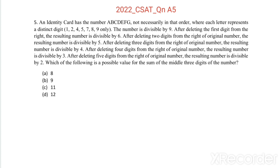The number is divisible by 9. After deleting the first digit from the right, the resulting number is divisible by 6. After deleting 2 digits from the right, the result is divisible by 5. After deleting 3 digits, divisible by 4. After deleting 4 digits, divisible by 3. After deleting 5 digits, divisible by 2. Which of the following is a possible value for the sum of the middle three digits?